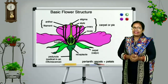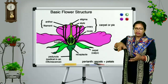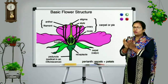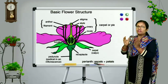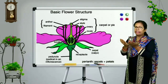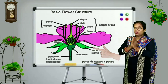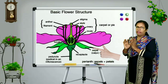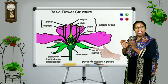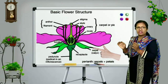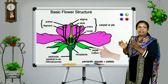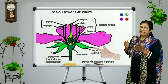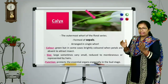The floral parts are arranged in a ring-like structure, also known as whorls. The outermost whorl is known as sepals. Sepals are green-coloured leaf-like structures, and they are collectively known as calyx.